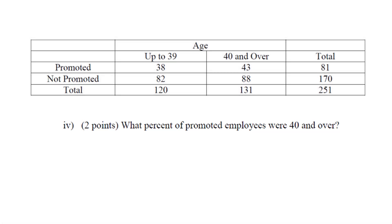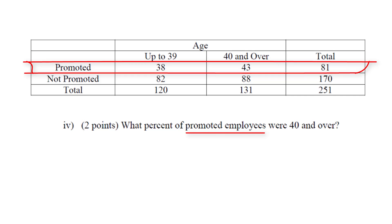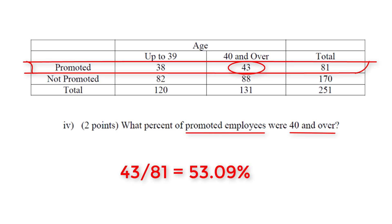Finally: what percent of promoted employees were 40 and over? To figure this out, we first look at only the promoted employees, which is 81. Out of those 81 total promoted employees, there were 43 who were 40 and over. This equals 43.09%.